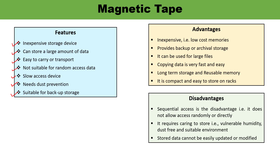Disadvantages of magnetic tape: it stores information sequentially, so it does not allow access to any random or direct data — a file cannot be accessed directly or randomly. It requires careful storage, as it is vulnerable to humidity and dust, and a dust-free suitable environment is needed. Once data is stored it cannot be easily updated or modified due to its sequential nature. Magnetic tapes also need a complex mechanism to maintain constant speed and to start and stop without breaking the tape.